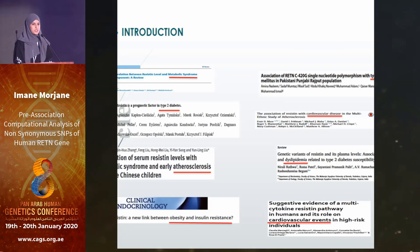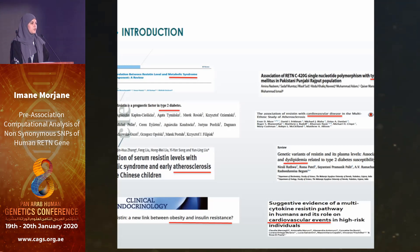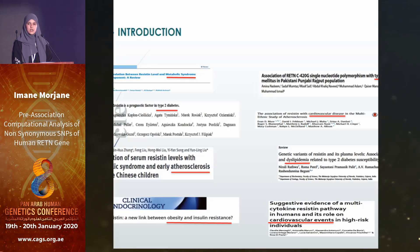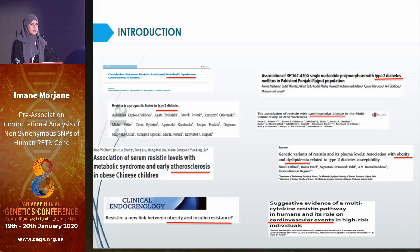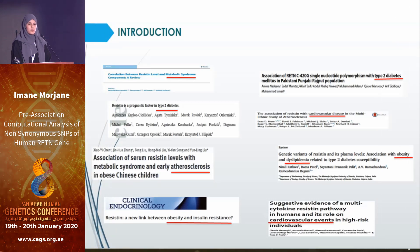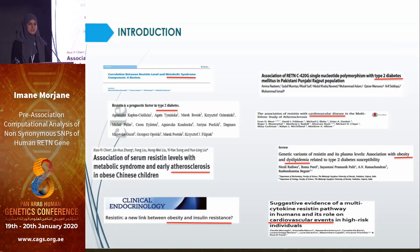RETN Gene codes for a protein called Resistin, which took its name from insulin resistance, as it was first discovered in rodents and then associated with insulin resistance in humans. It was studied in association with many metabolic diseases and inflammatory abnormalities.